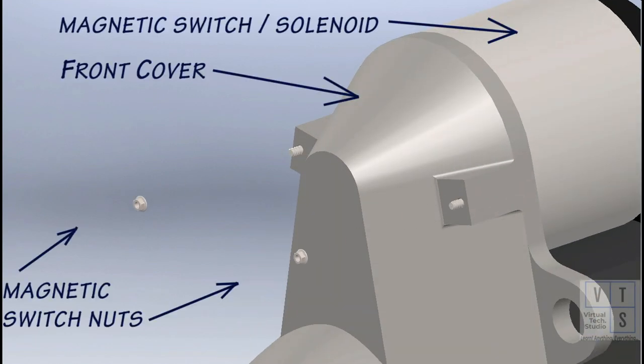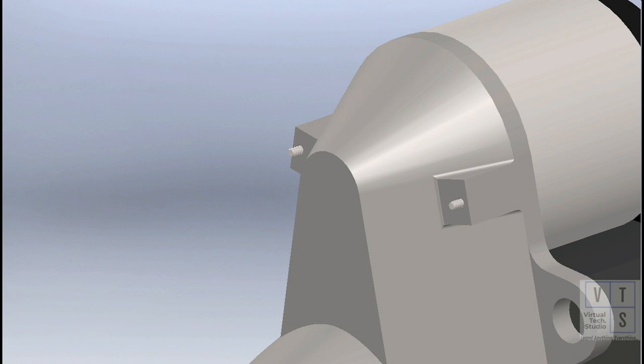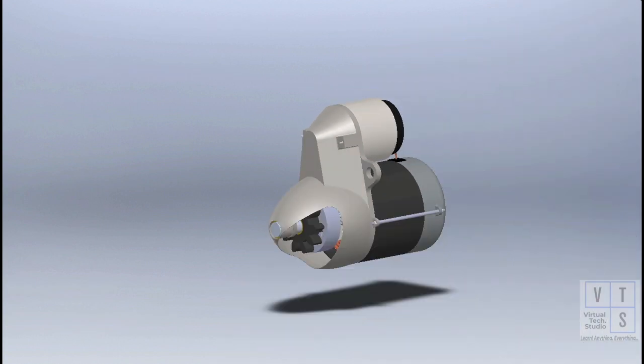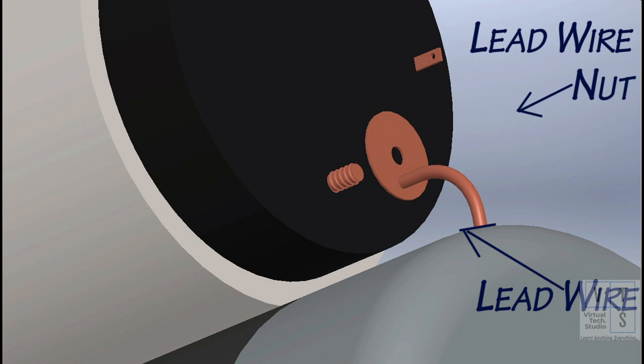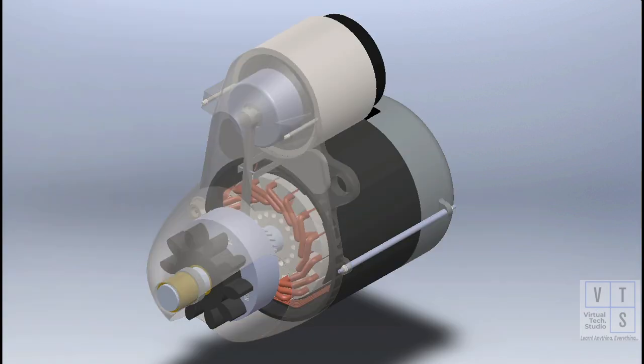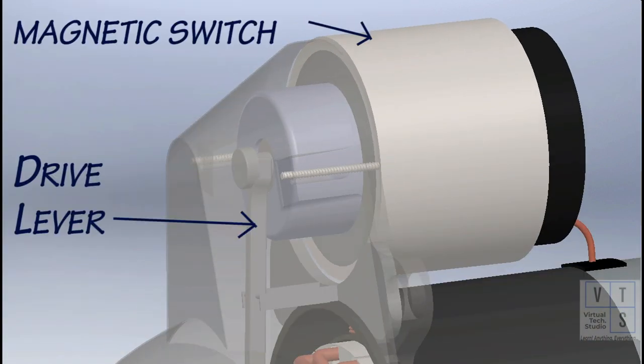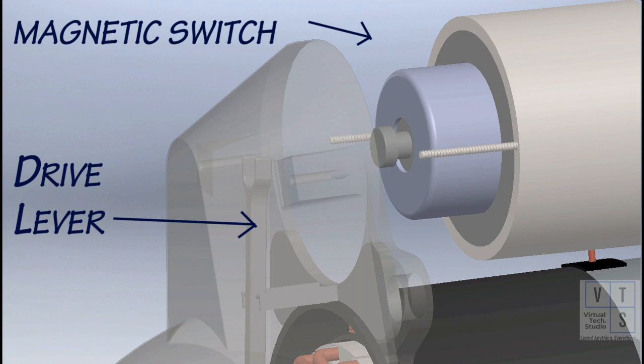Remove two nuts of magnetic switch. Remove the lead wire nut from the magnetic switch and disconnect the lead wire. Then take out the magnetic switch such that the inside hook is disconnected from the drive lever.